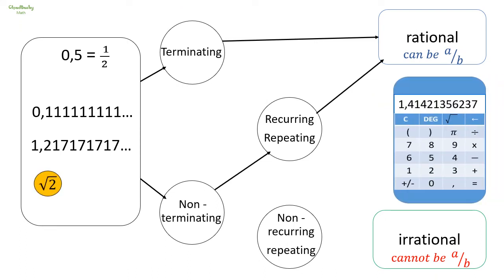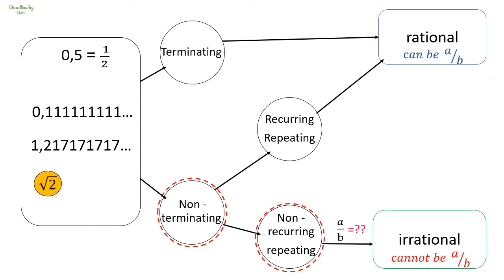The square root of 2 is equal to 1.41421356... This number goes on and on without coming to an end, so it is non-terminating. A closer look at the digits displayed on the calculator shows that root 2 is non-repeating — no digits repeat in a defined pattern after the decimal comma. This number will never stop and never repeat, so it cannot be written as a fraction, making the square root of 2 an irrational number.